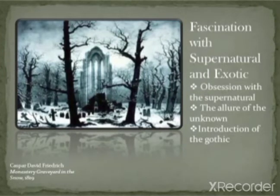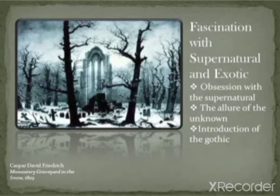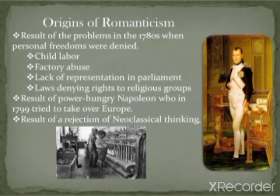Fascination with supernatural and exotic things was also common. There was a certain obsession with the supernatural, the allure of the unknown, the mystery of medieval castles and knights. Another important feature is the introduction of the Gothic style: Gothic architecture, popular during the medieval period, was revived with the advent of Romanticism, and we find this Gothic element in novels, poetry, and so on.